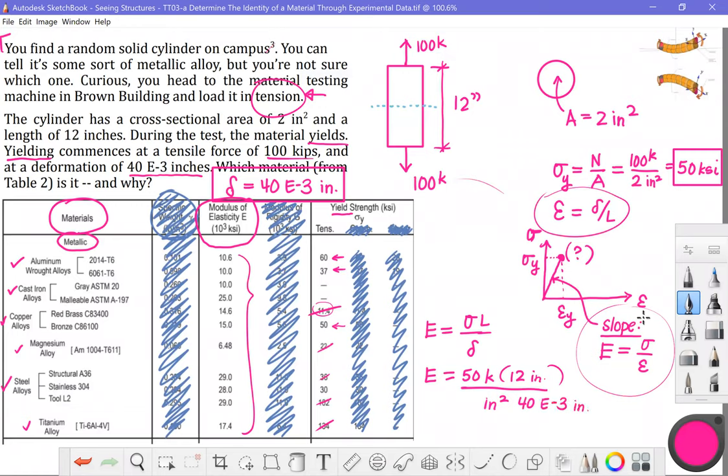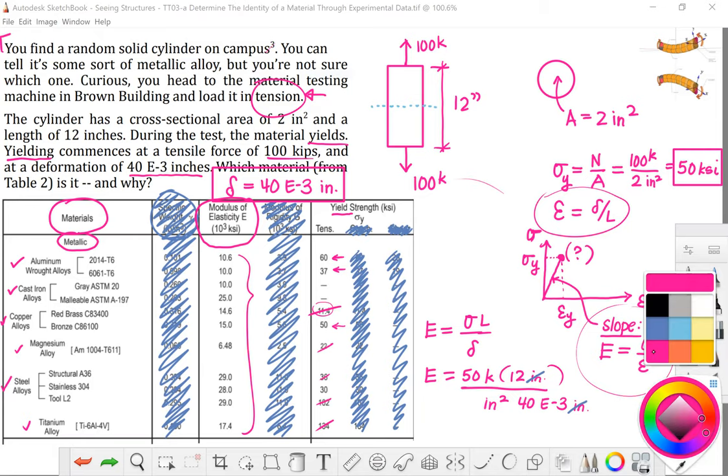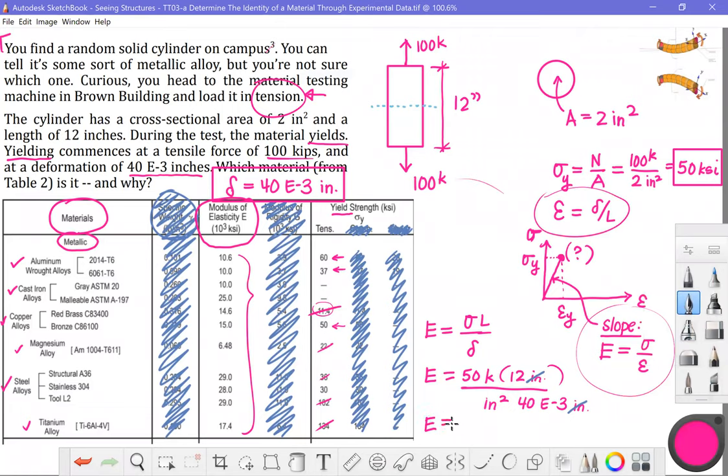As always, spot check your units at this point. I've got inches and inches there. That leaves KSI. And those are good units for the modulus of elasticity. In fact, you can see here in the table, they are shown in terms of 10 to the 3 KSI. We can go ahead and perform this operation in our calculator. And we will get 15 E3 KSI.